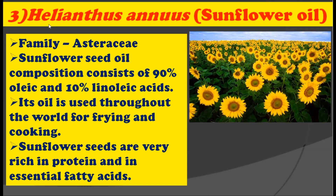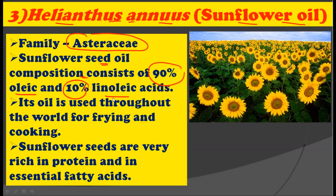The third plant is Helianthus annuus, commonly called sunflower, and the oil obtained from it is called sunflower oil. This plant belongs to the family Asteraceae. Sunflower seed oil composition consists of 90% oleic acid and 10% linoleic acid — together they constitute the sunflower oil. This oil is used throughout the world for frying and cooking.